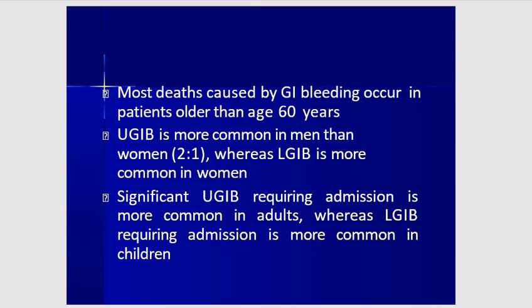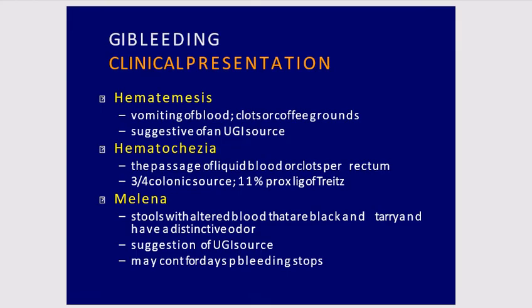Significant upper GI bleeding requires hospital admission. The clinical features include hematemesis, which is vomiting of blood — clots or coffee grounds appearance is suggestive of an upper GI source. Hematochezia is the passage of liquid blood or clots per rectum. In 75% of cases there is a colonic source, and in 11% the source is proximal to the ligament of Treitz.